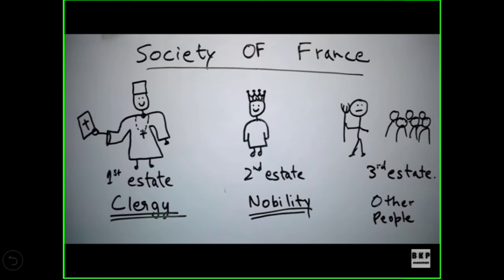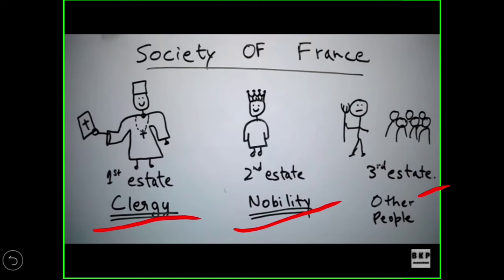The society of France was divided into three estates. The first estate was known as clergy, the second estate as nobility, and the third estate comprised the other people. The clergy were the priests and church people at the top position. The second estate, the nobility, were the officials. And the third estate were the other people — traders, farmers, and artisans. The maximum number of people came in the third estate.